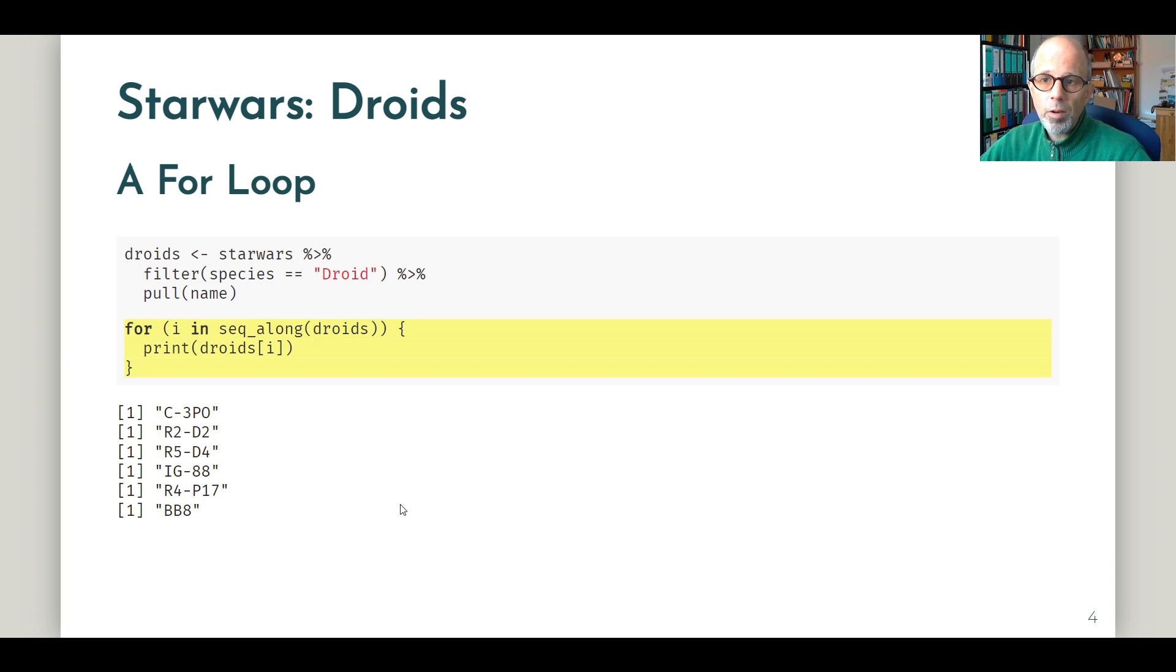Before we simplify the code, we'll take it one step further. Let's also think about the length of the names—how many characters are in each name. The first couple of droids all have the same number of characters, but then the last two have a longer and a shorter droid name.